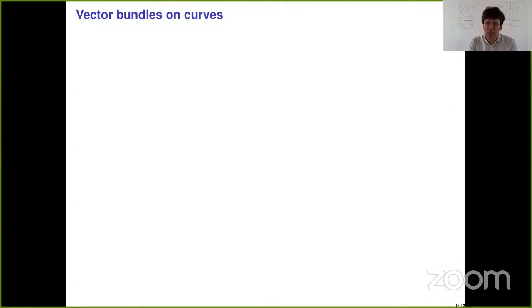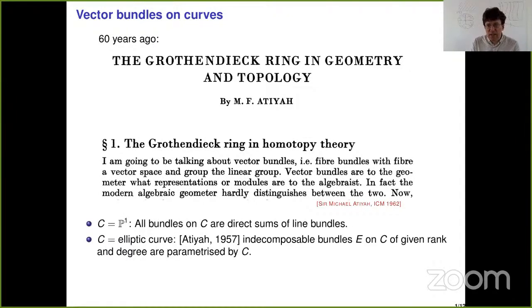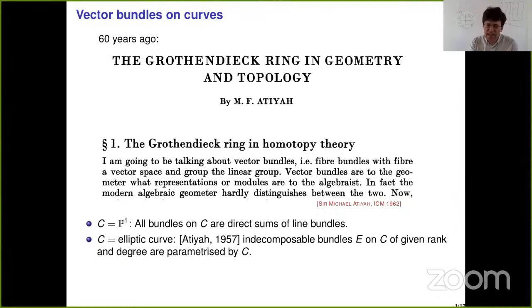The story starts with vector bundles on curves, and who could introduce them more eloquently than Michael Atiyah, which he did at the ICM 60 years ago, where he explained that modern algebraic geometers basically don't distinguish between modules and vector bundles. The theory starts with the projective line, where every vector bundle is just a direct sum of line bundles. Then the next step is the elliptic curve, where Atiyah famously proved that indecomposable bundles, once you fix the rank and degree, are naturally parameterized by the elliptic curve itself.